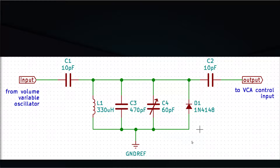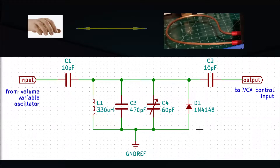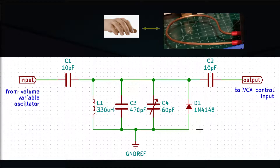The positive part of the signal will be levelled and converted to a positive DC voltage in the first stage of the VCA, as we will see in the next video on the theremin. When the hand of the player is far away from the volume antenna, the Volume Variable Oscillator will provide its maximum frequency and this parallel LC resonator will let all the signal pass through. But when the hand of the player gets closer to the volume antenna, the frequency of the oscillator will lower and the parallel LC circuit will start to shorten the signal toward ground. The closer the hand to the antenna, the smaller the signal at the output of the circuit. The VCA will then control the volume of the audio signal proportionally to the voltage amplitude at the VCA control input.